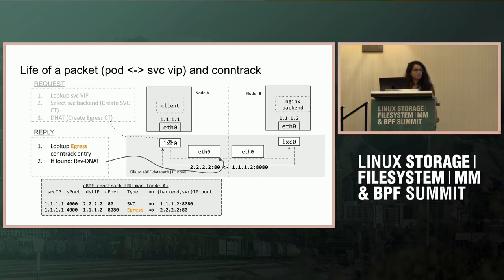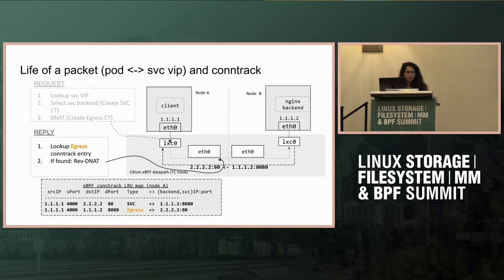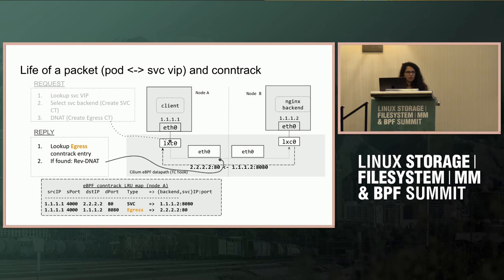An audience member asks whether node A and node B are on two different machines, and whether the eth0 is a physical NIC. The speaker clarifies: the LXC0 is the virtual interface for the container — it's the veth peer on the host network namespace — and the eth0 on the node is the physical network interface.